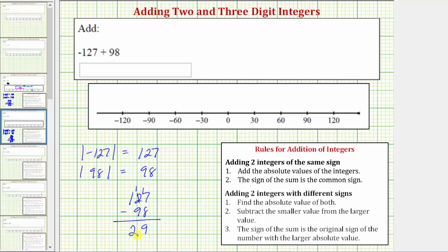But we still need to determine the sign of the original sum. The sign of the sum is the original sign of the number with the larger absolute value. Notice that negative 127 had the larger absolute value, and therefore the sum is negative 29.